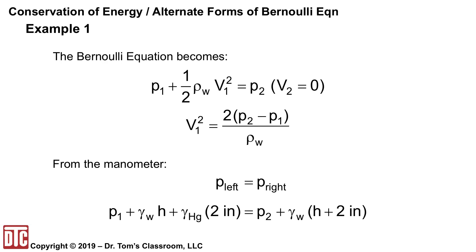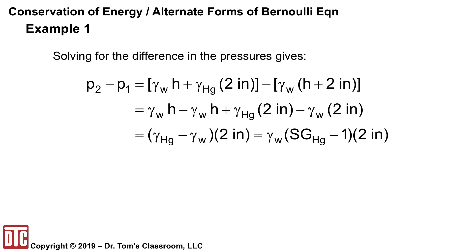The Bernoulli equation becomes: p1 plus one-half rho v1 squared equals p2, since v2 equals zero at the stagnation point. Rearranging, v1 squared equals two times the pressure difference divided by the density of water. From the manometer, p-left equals p-right: on the left you have p1 plus gamma-water times h plus gamma-mercury times two inches; on the right you have p2 plus gamma-water times h plus two inches. Solving the algebra, the common h cancels.